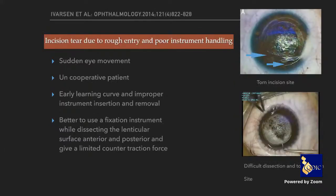Incision tears are also common in SMILE — if the incision opening is less than 2.2 mm, you can enlarge the flap while dissecting the lenticule, which can induce astigmatism. It's better to use a 2.8 or 3 mm opening for lenticule removal. Also, stabilize the globe by countertraction to prevent sudden instrument movement during lenticule extraction.